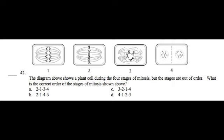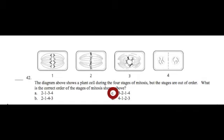Yay! The diagram below shows a plant cell during the four stages of mitosis, but the stages are out of order. What is the correct order of the stages of mitosis shown below? A, two, one, three, four. B, two, one, four, three. C, three, two, one, four. Or D, four, one, two, three. Yay!